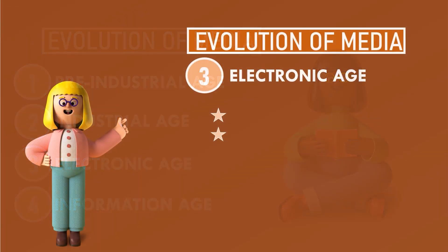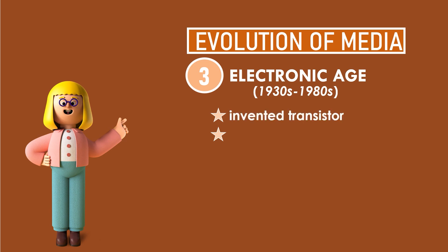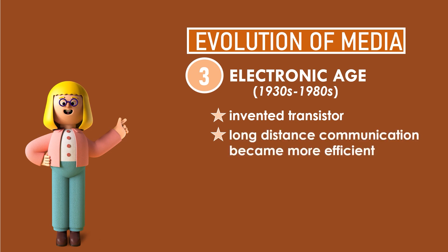The electronic age happened in the years 1930s to 1980s, and the main invention during this age is what we call the transistor. The transistor is considered one of the most important devices invented by humankind. It helped the advancement of computers and also made trillions of computations faster and easier, and it was used in many devices that made long-distance communication a lot more efficient. In this episode, we will know the technologies that became possible through the power of the transistor and other advancements in media during the electronic age.